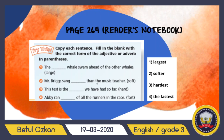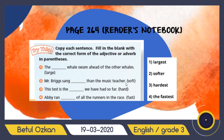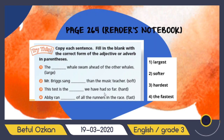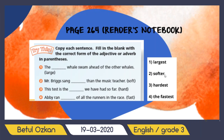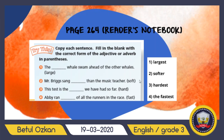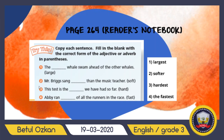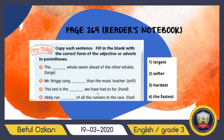Second sentence: 'Mr. Brings sings ___ than the music teacher.' The word 'soft' is given. I compare two people — Mr. Brings and the music teacher — and I can see 'than,' so I add -er. The answer is 'softer.' Mr. Brings sings softer than the music teacher.